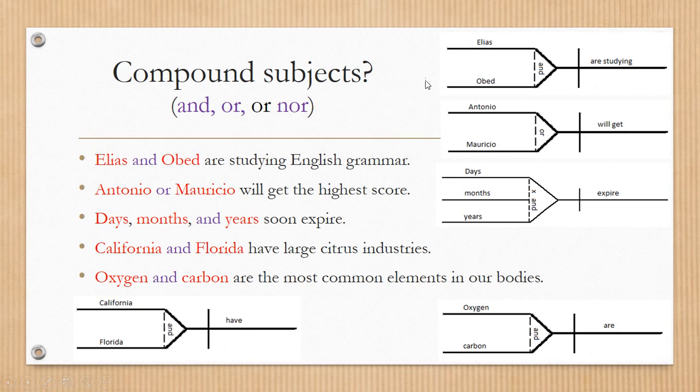Now, the second sentence says Antonio or Mauricio will get the highest score. We're talking about two guys, Antonio or Mauricio. So they have the probability to get the highest score. So dotted line, don't forget it. We go back to the baseline. We divide it. We place the verb.